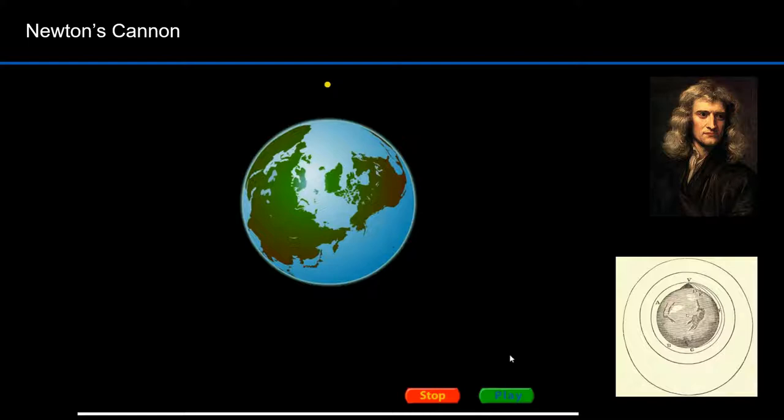In his work on falling bodies, Galileo studied projectile motion. Newton realized that the moon is essentially a projectile. I use the term satellite to mean anything that orbits another body — hence the moon is a satellite of the earth. Newton considered firing a ball out of a cannon from a high mountain. The graphic on the lower right is an illustration taken from his book, Principia Mathematica.